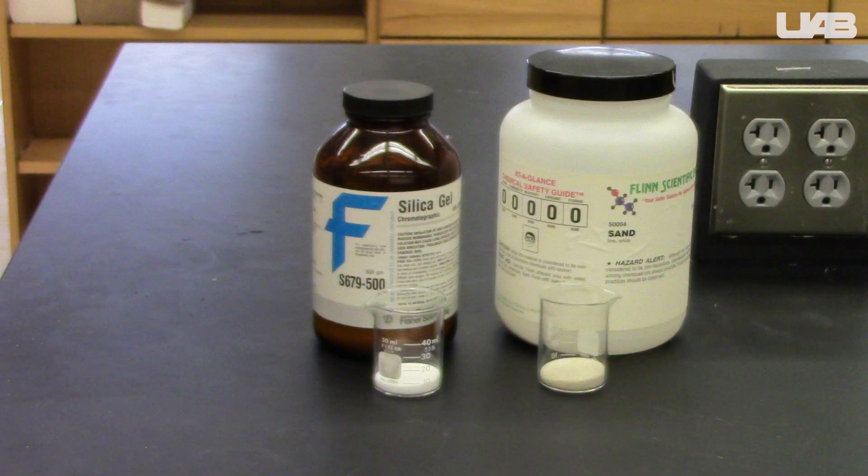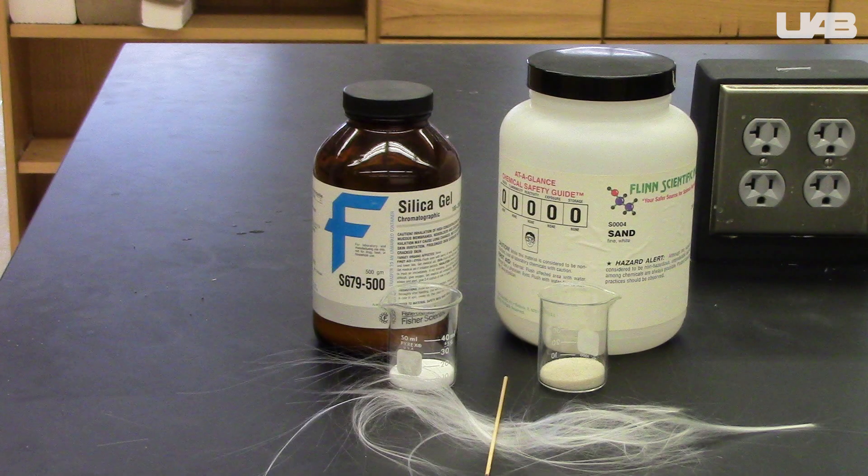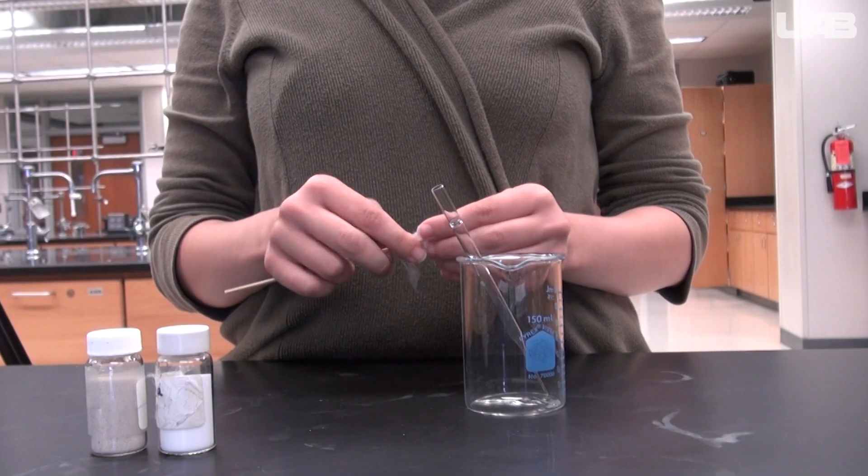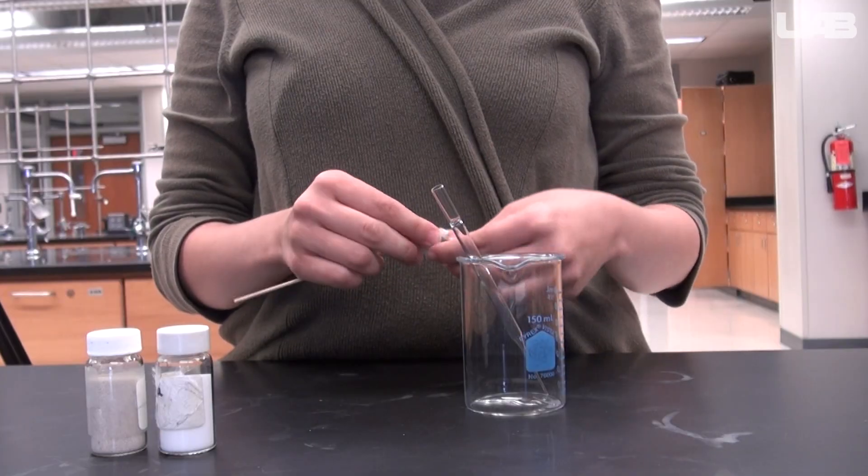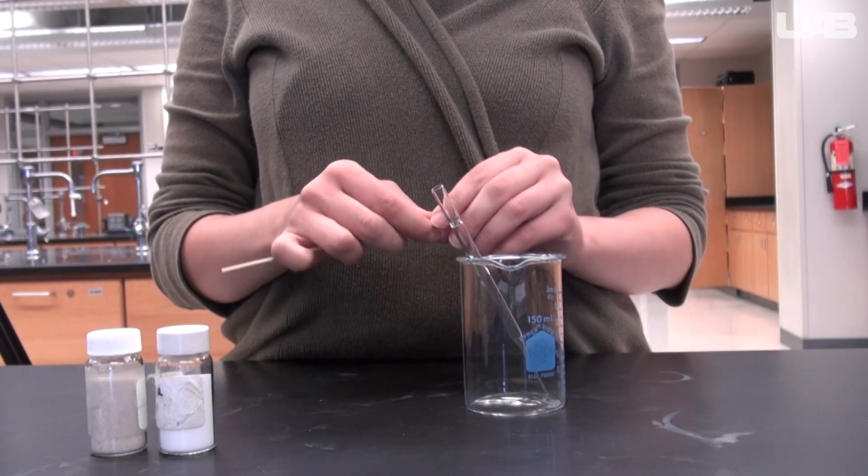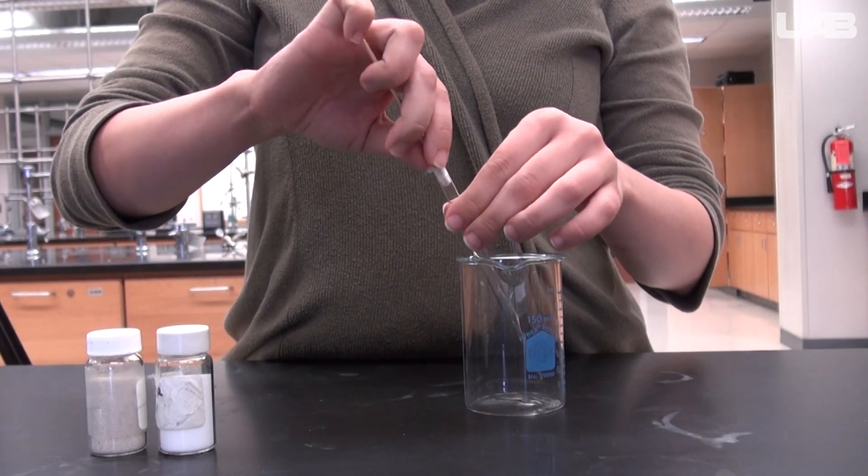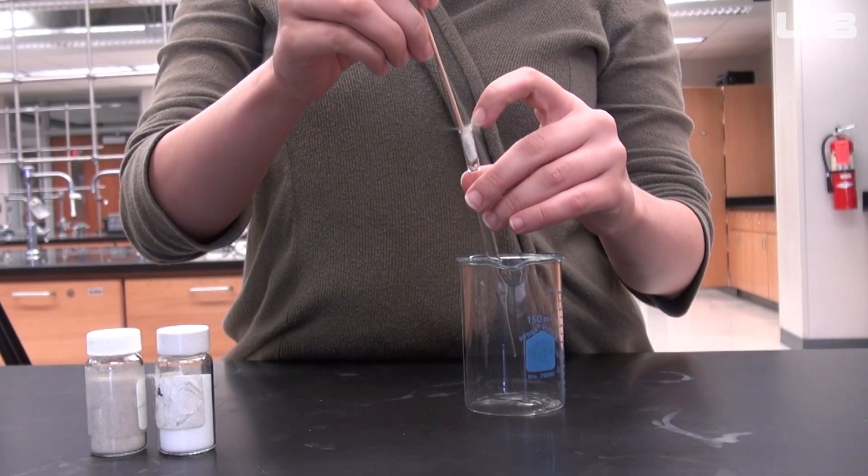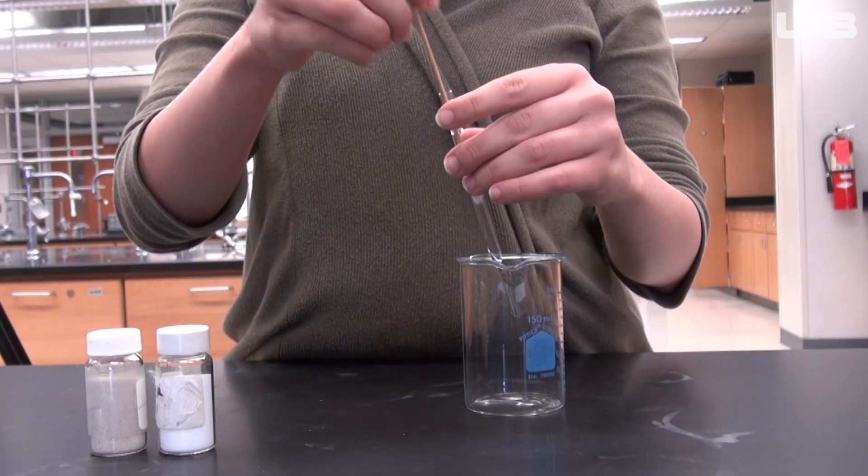You will need silica gel, sand, glass wool, a small wooden rod, a Pasteur pipette, and two scoopulas. You will take the glass wool and bunch it up to form a plug. Then use the wooden rod to press it down to the bottom of the Pasteur pipette. It should be tight enough that the stationary phase does not go through, but loose enough so that it allows the mobile phase to flow through.